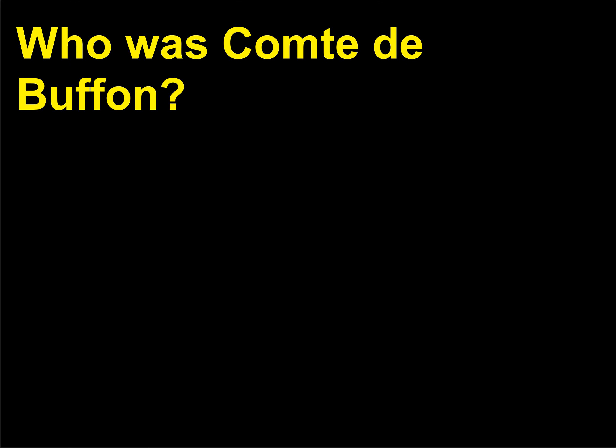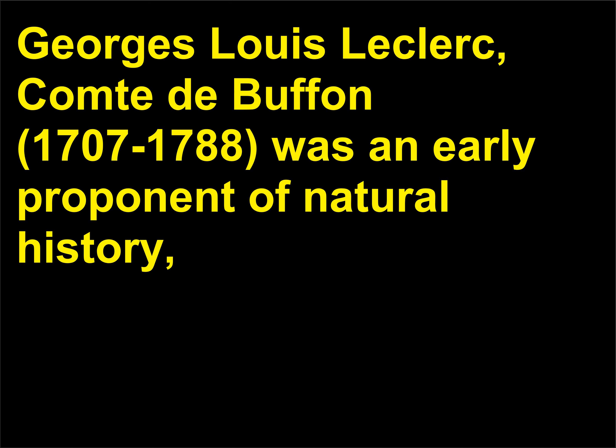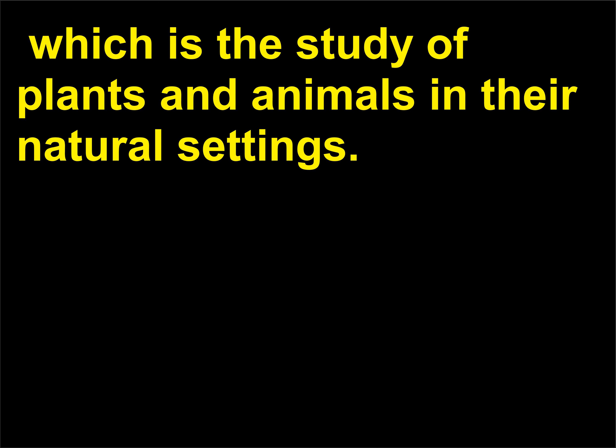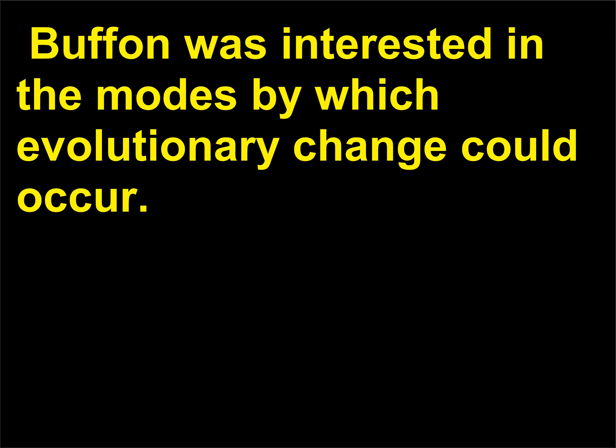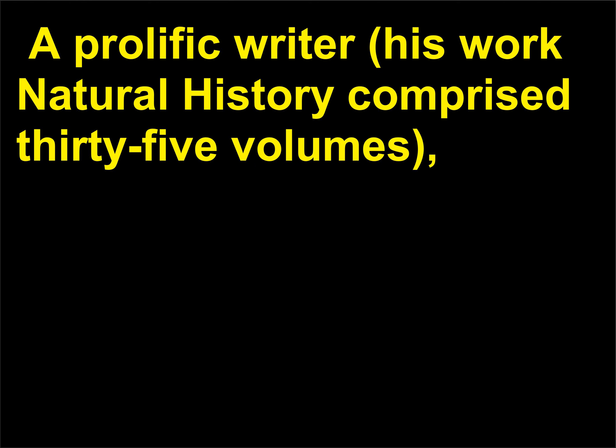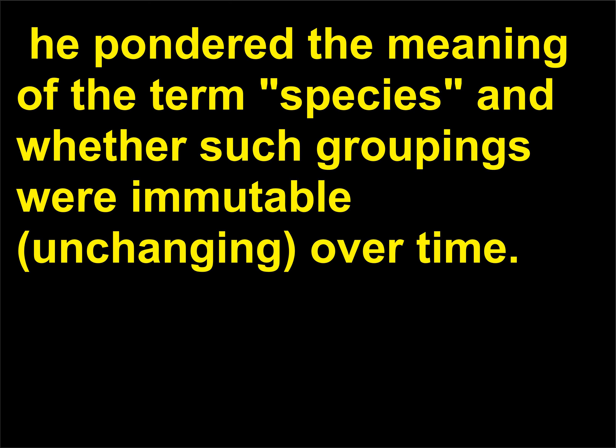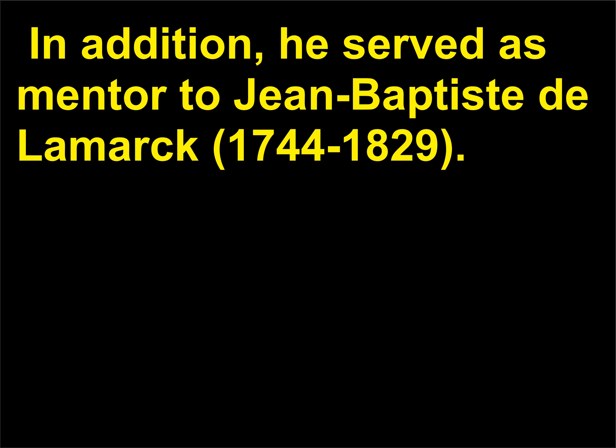Who was Comte de Buffon? Georges Louis Leclerc, Comte de Buffon, 1707–1788, was an early proponent of natural history, which is the study of plants and animals in their natural settings. He was also known for his work as a mathematician. Buffon was interested in the modes by which evolutionary change could occur. His work Natural History comprised 35 volumes. He pondered the meaning of the term species and whether such groupings were immutable over time. In addition, he served as mentor to Jean-Baptiste de Lamarck, 1744–1829.